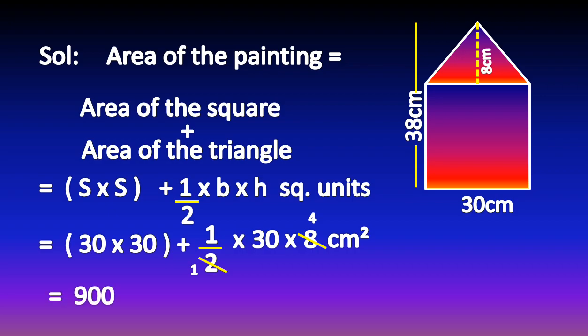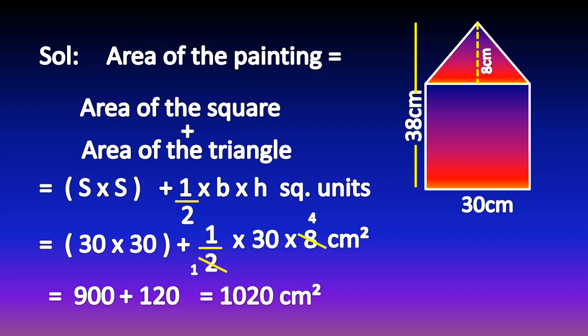30 × 30 is equal to 900, plus 30 × 4 is equal to 120, which gives 1020 cm². This is the area of the glass painting. Thank you.